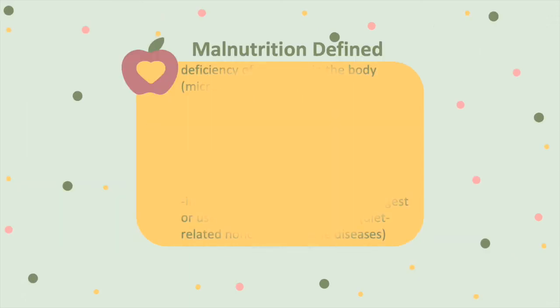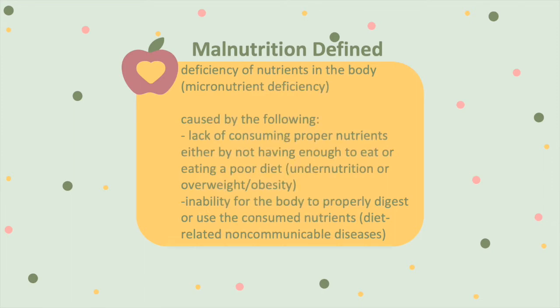Malnutrition defined: a deficiency of nutrients in the body, known as a micronutrient deficiency. It is caused by the following: lack of consuming proper nutrients, either by not having enough to eat or by eating a poor diet; undernutrition, meaning the child is underweight; or overweight and obesity — two different ends of the spectrum when it comes to malnutrition.